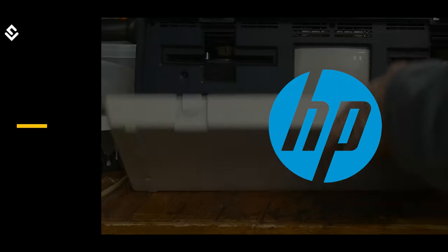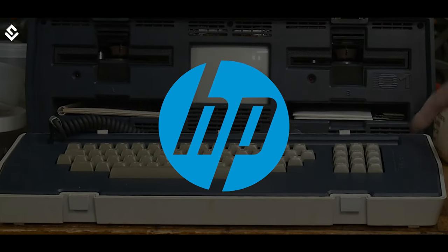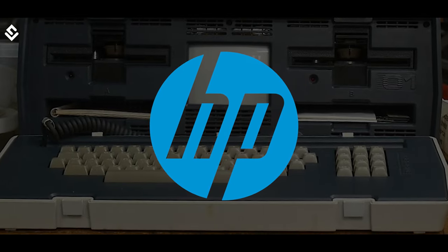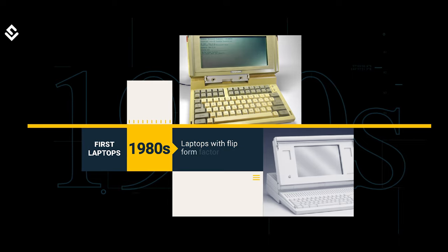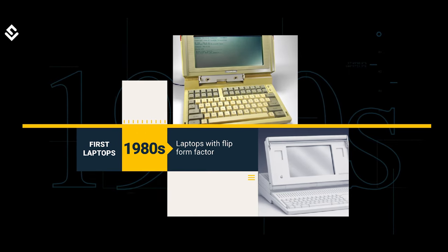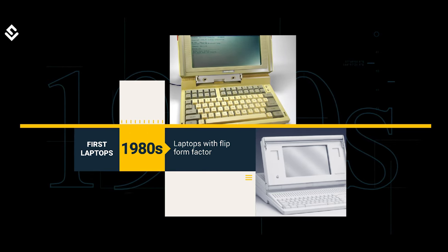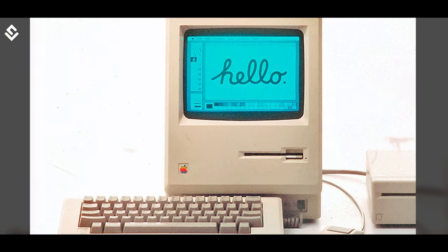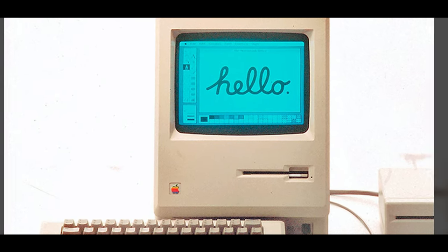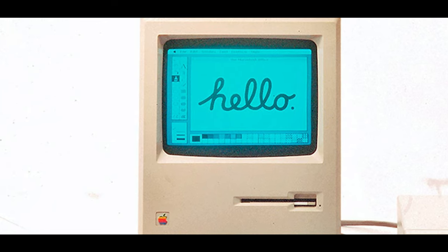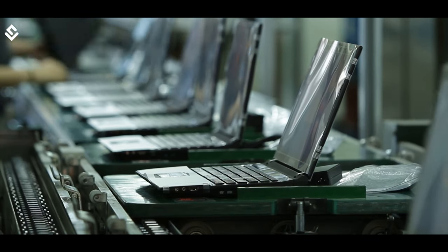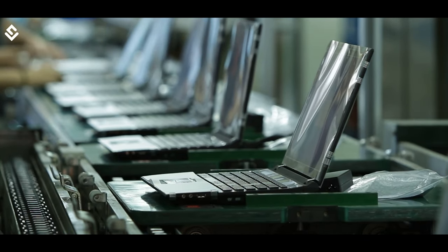Hewlett Packard (HP) also started producing portables during that period. The first laptops were produced in the 1980s with a flip form factor. Displays reached 640x480 resolutions in 1988, and by 1991, color screens were also attached to portable computers. Thus, slowly, modern laptops came into being.